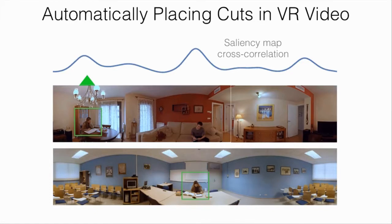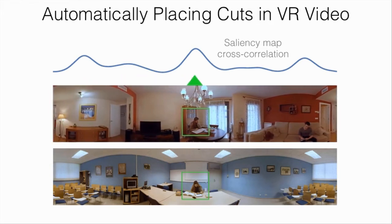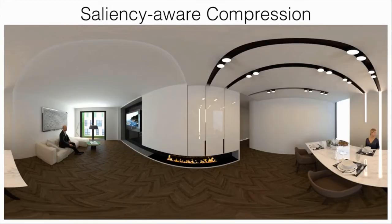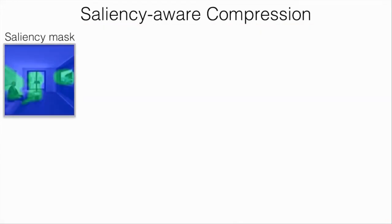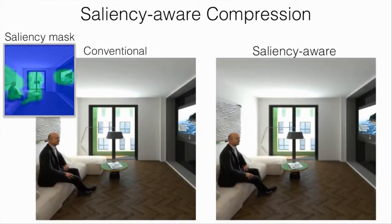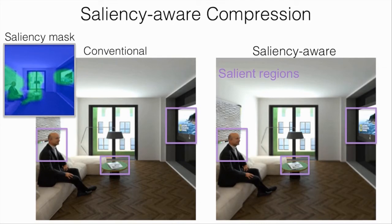Another application of saliency maps is aligning cuts in VR videos. One way to do this is to maximize the Pearson correlation coefficient of the saliency maps of frames immediately before and after the cut. Using this approach, the two frames before and after the cut are automatically shifted such that the two actors in the frames align. Finally, the bandwidth required by high-resolution VR images and videos is a daunting challenge for interactive or cinematic content. To reduce the bandwidth required, our saliency compression approach retains high resolution for high saliency regions, while compressing less important regions more aggressively.